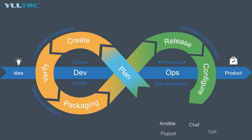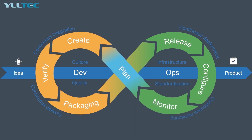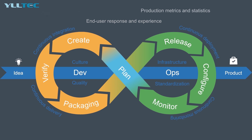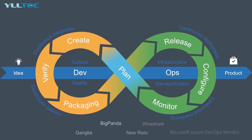Now the application runs in the production environment, and we do continuous monitoring. Monitoring allows DevOps organizations to identify specific issues of releases and understand the impact on end users. Common monitoring activities include performance of IT infrastructure, end user response and experience, production metrics, and statistics. Information from monitoring often impacts the DevOps plan activities required for change and new release cycles. Notable tools include BigPanda, Ganglia, New Relic, Wireshark, and Microsoft Azure DevOps Monitor.